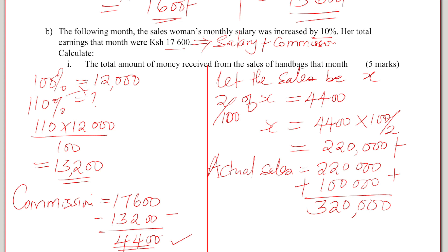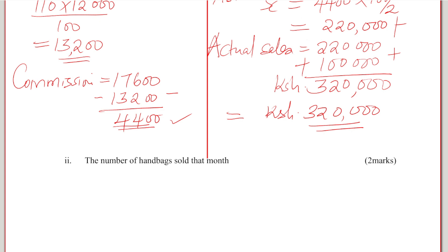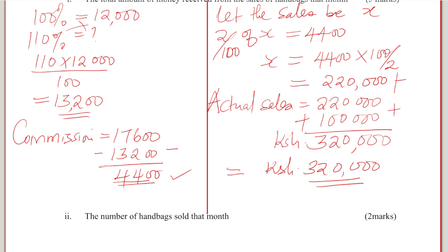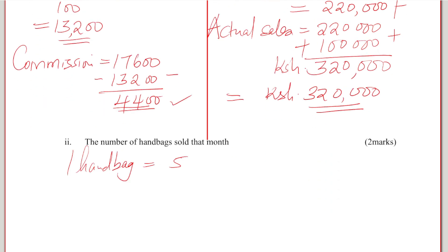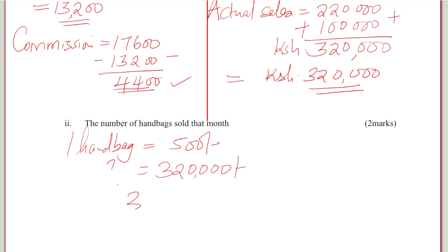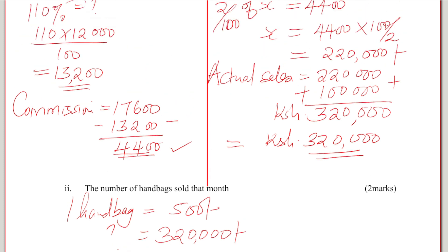So $320,000 are the actual sales made by the saleswoman. The question asks for the total amount of money received from the sale of handbags, so the answer is $320,000. Now we go to the next part: the number of handbags sold that month. We already have the total sales of $320,000, and one handbag was costing $500. So the number of handbags sold is $320,000 divided by $500, which gives 640 handbags. That is simply how you solve this question.